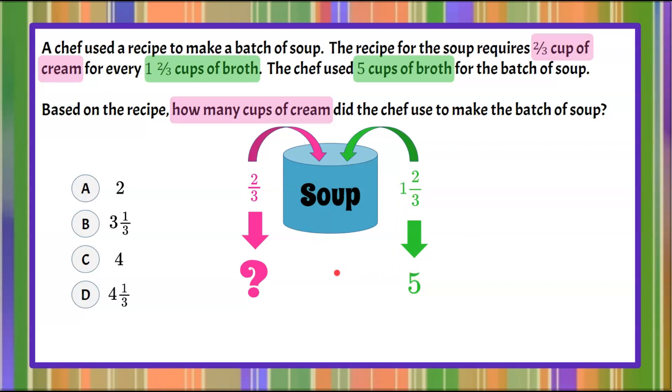We want to keep the flavor profile of the recipe meaning we don't want it to taste different, so we're going to use what we understand about a proportional relationship. So we're going to write a proportion.